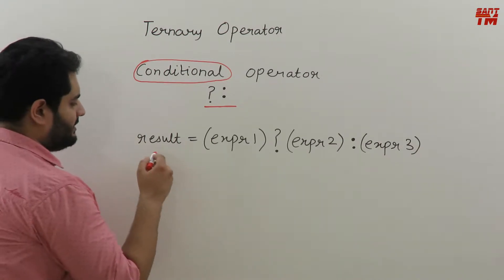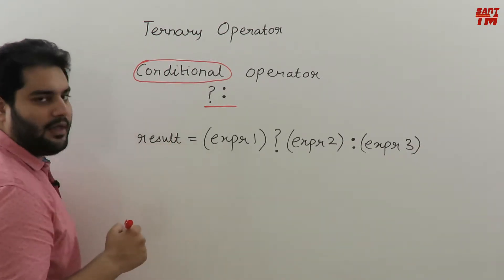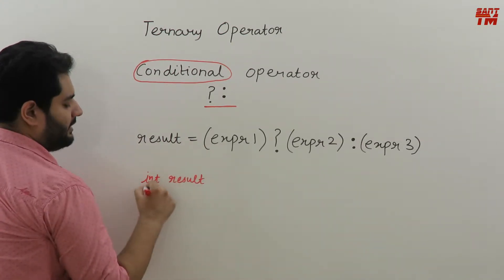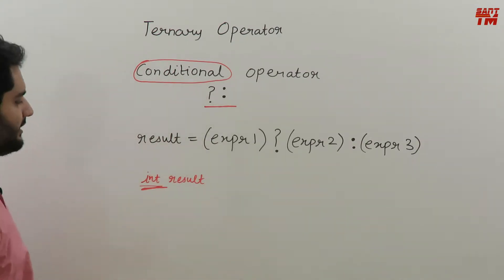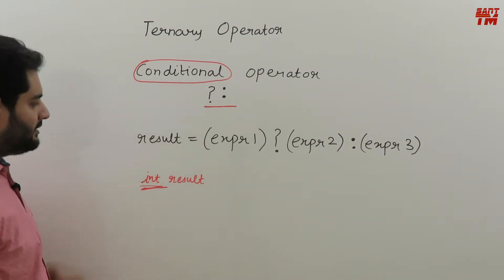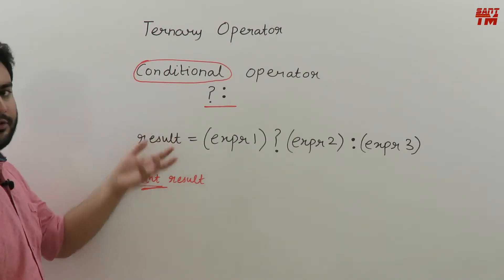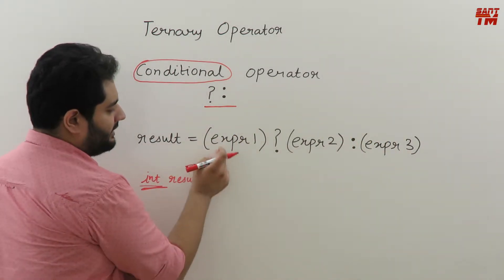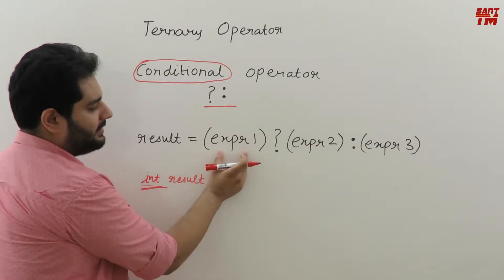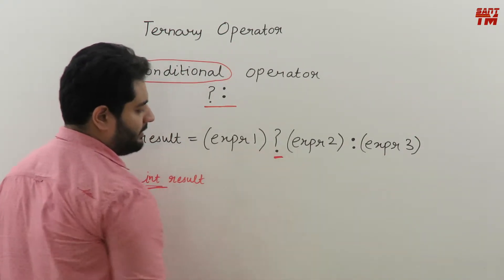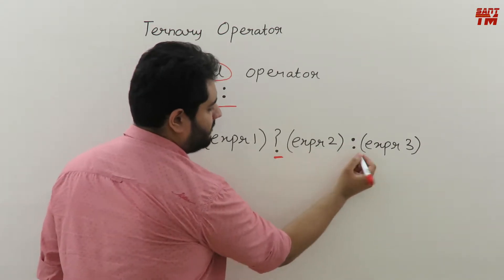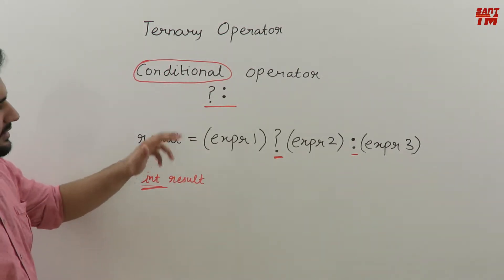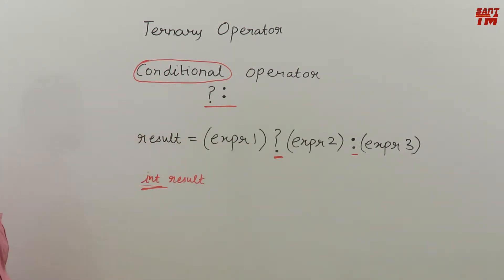Suppose I have written an expression in C language and declared a variable called result — for example, int result. Result is occupying some memory. I have written a statement where in parentheses I have expression one, then a question mark, then expression two, then a colon, and then expression three. This is the representation of the conditional operator in a typical C statement.